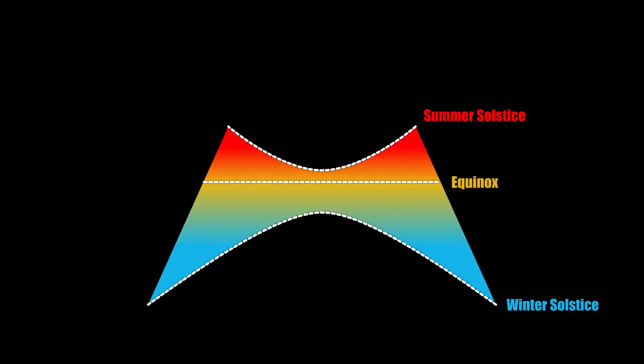In fact, this is how shadows move throughout the year. At Solstice the path is curved, and at Equinox it's straight.